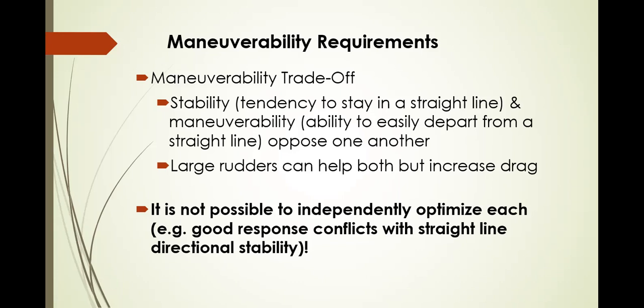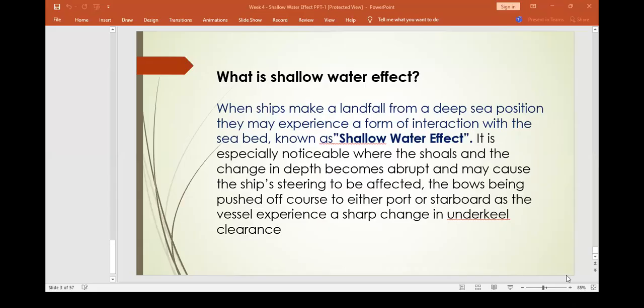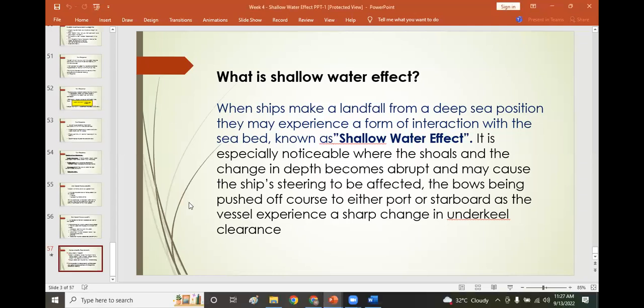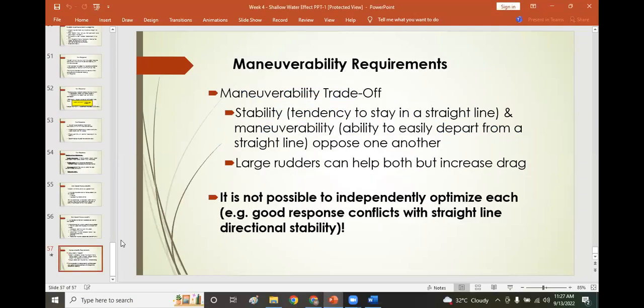Maneuverability trade-off: stability is the tendency to stay in a straight line, while maneuverability is the ability to easily depart from a straight line — these oppose one another. A large rudder can help both but increases drag. It is not possible to independently optimize each: good response conflicts with straight-line directional stability. That is all about shallow water effect.